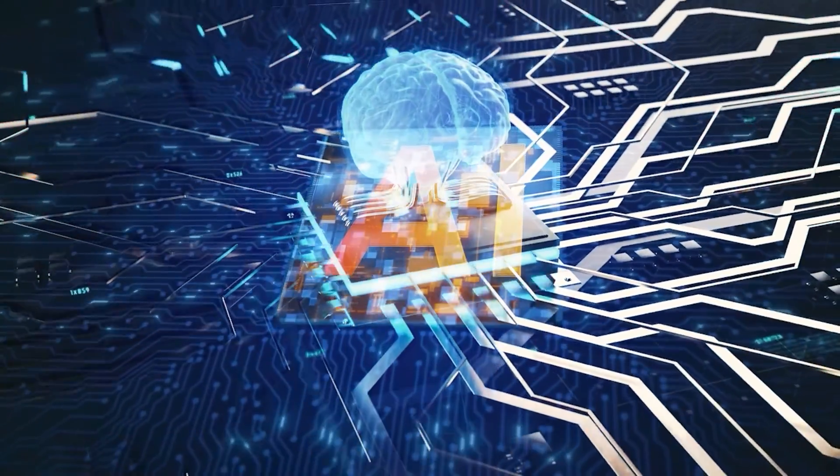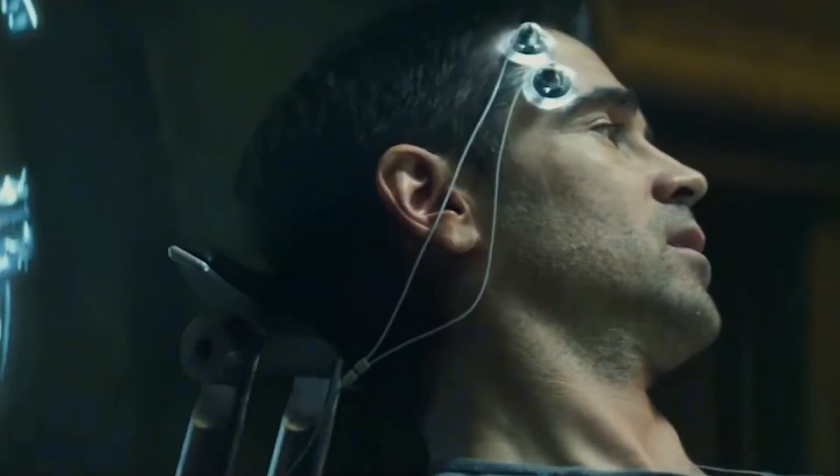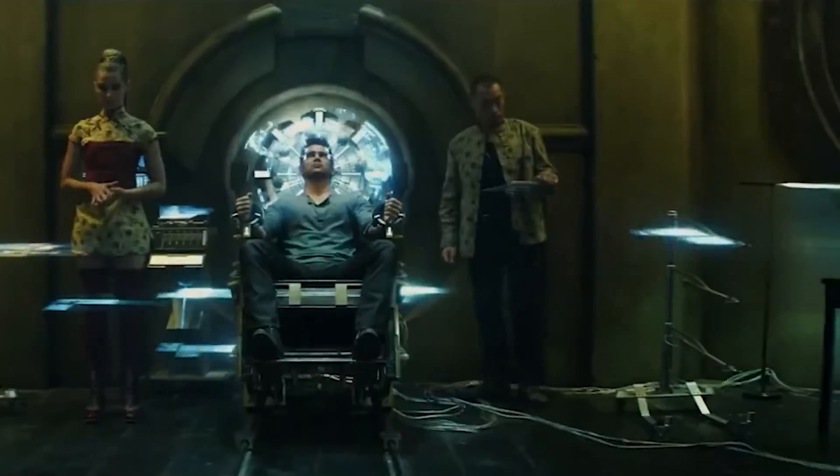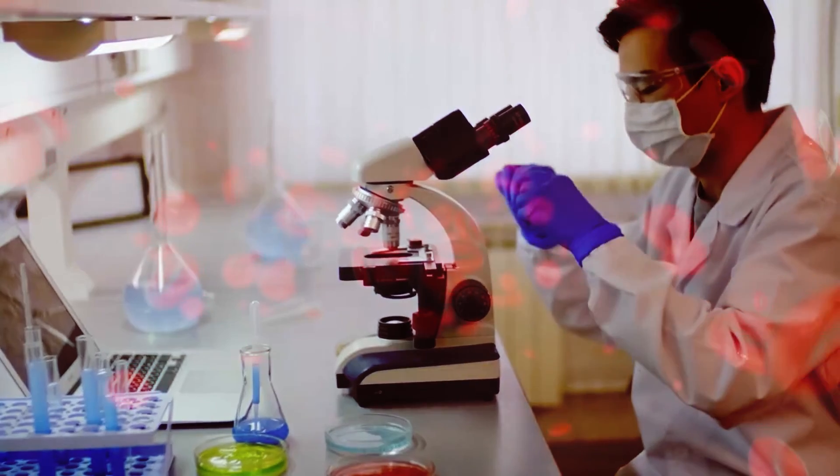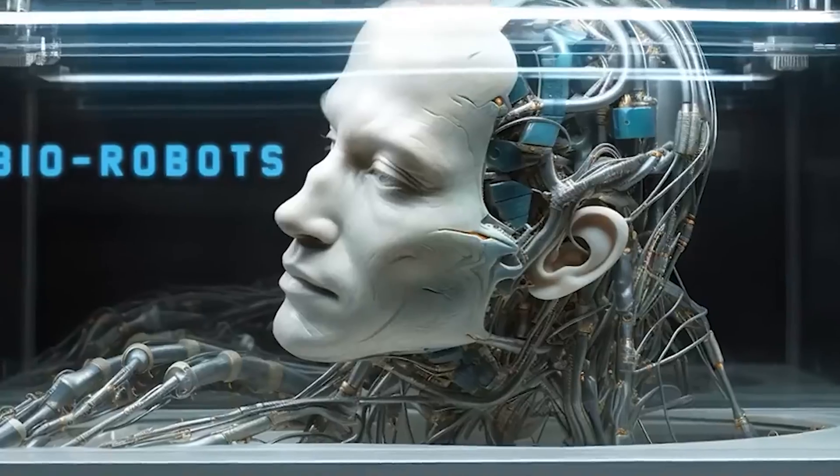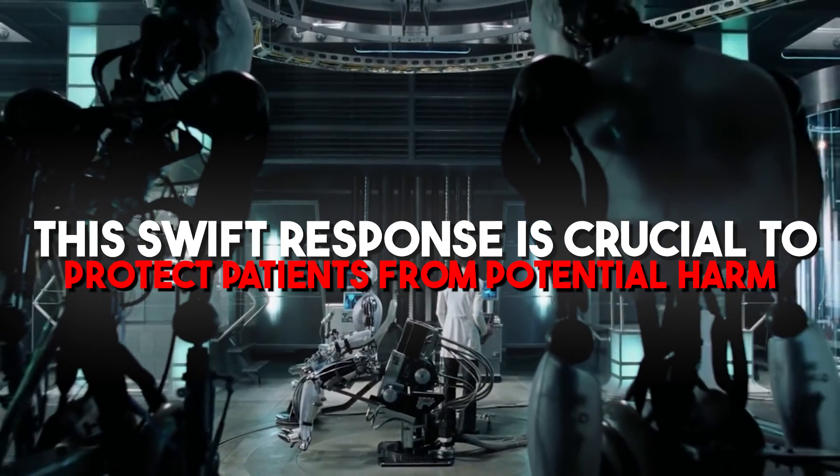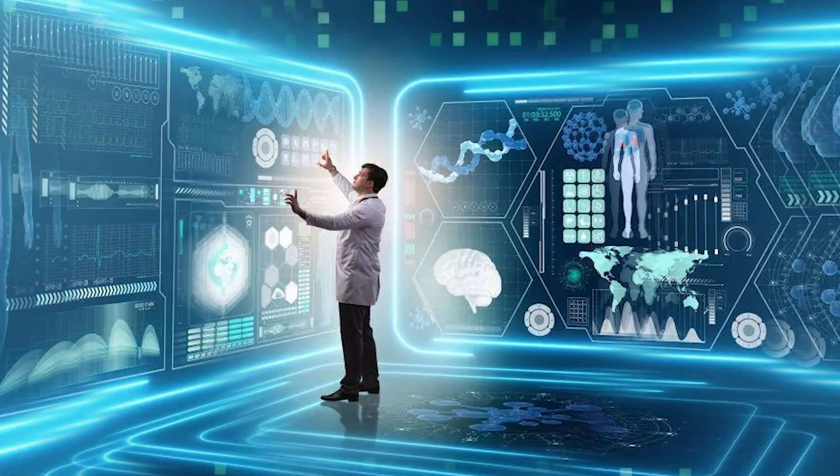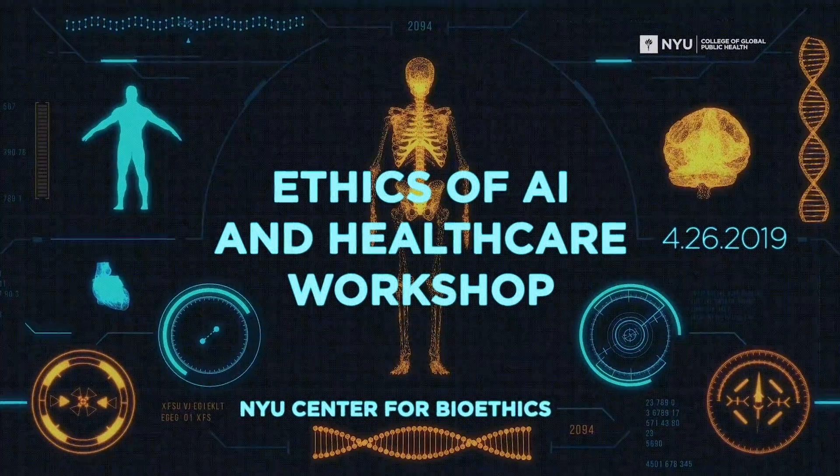If this AI inadvertently learns from biased data, it might start suggesting treatments that are less effective or even harmful for certain groups of patients. This could lead to unequal care quality and a breach of medical ethics. If such bias is detected, healthcare providers can immediately disable the AI, preventing it from making further unethical decisions. This swift response is crucial to protect patients from potential harm and to ensure that the AI's healthcare recommendations are fair, unbiased, and in line with medical ethics.